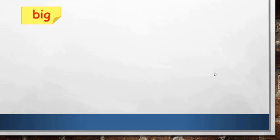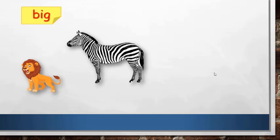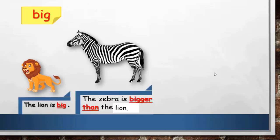Now we have a new grammar lesson. Let's start together. Here we have 'big' and 'big' is an adjective. I want to use 'big' to compare between the lion and the zebra. The lion is big, and to compare between the lion and the zebra, I will say the zebra is bigger than. Here I used '-er than' to compare between two things.